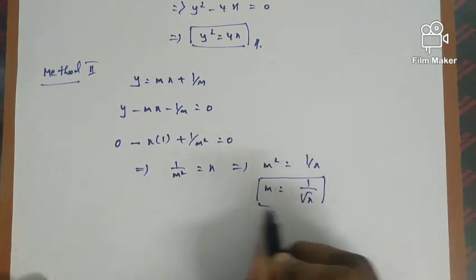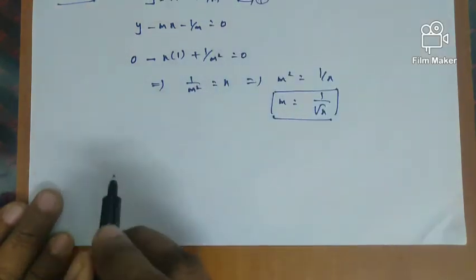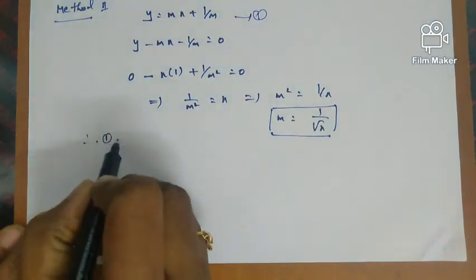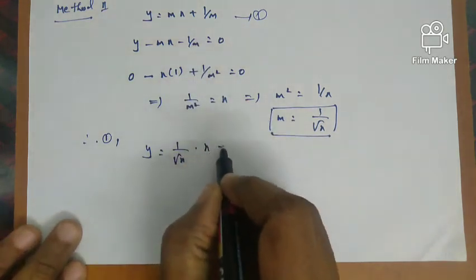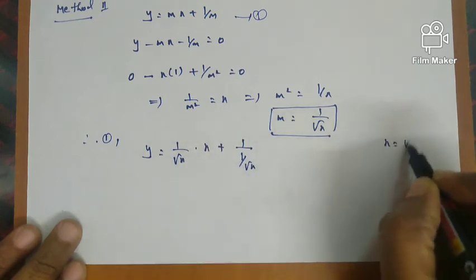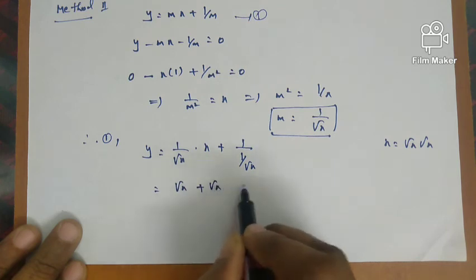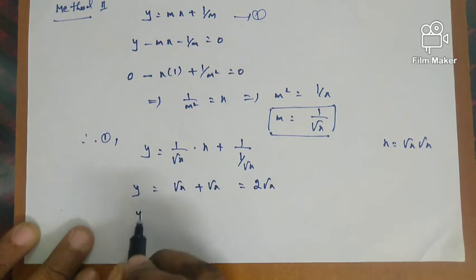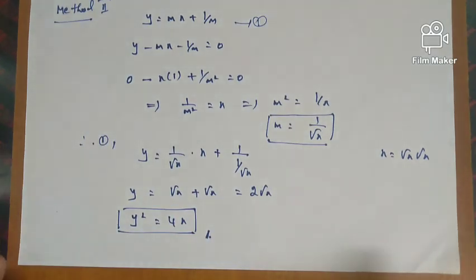Now eliminate the parameter by substituting m = 1/√x back into equation 1: y = (1/√x)·x + 1/(1/√x) = √x + √x = 2√x. Squaring both sides gives y² = 4x. This is the same required equation, confirming both Method 1 and Method 2 give the same answer. Thank you for watching.